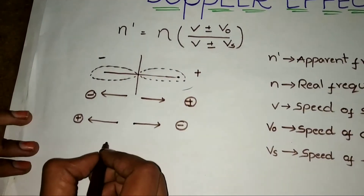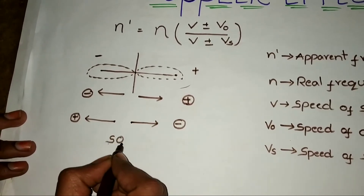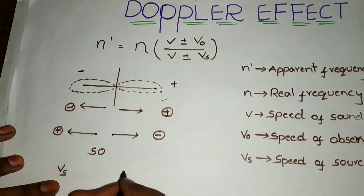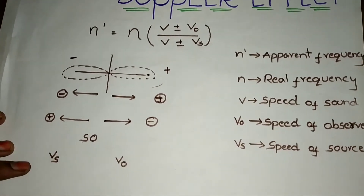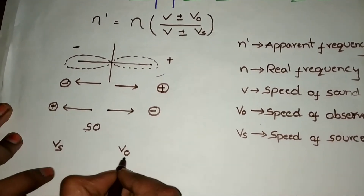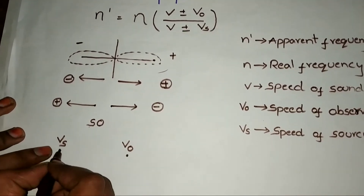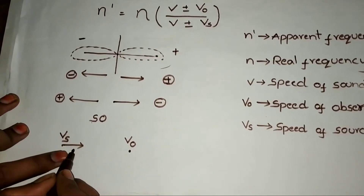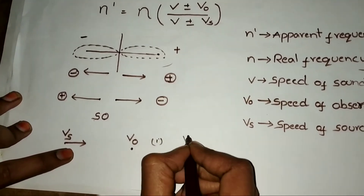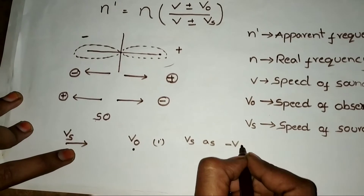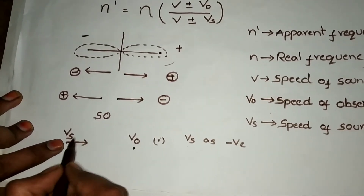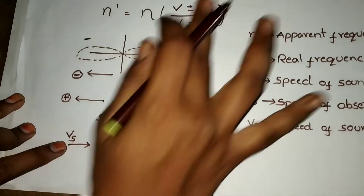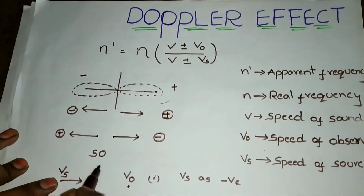First, remember the word SO — S is velocity of source, O is velocity of observer. Suppose V0 is at rest and the source is moving towards the observer, meaning in the positive direction. Then you have to take Vs as negative. Normally if something moves in the positive direction we take positive, but for this trick you take the opposite — so moving towards means negative.